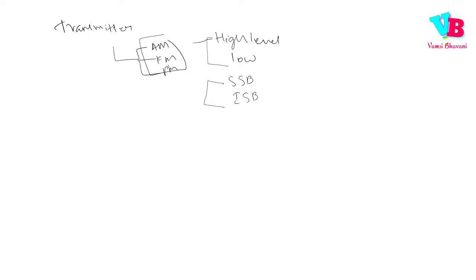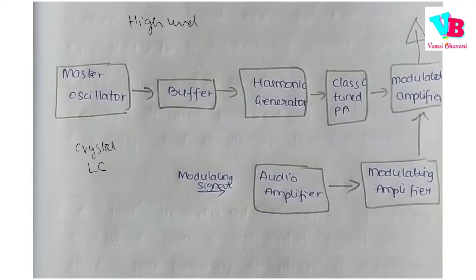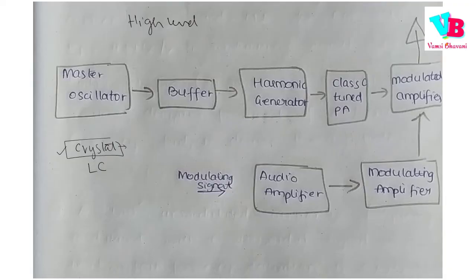We will explain a block diagram for High Level Transmitters. This is the High Level AM Transmitter block diagram. Here we have a Master Oscillator and a Buffer. The Master Oscillator can be a Crystal Oscillator or an LC Oscillator. The Crystal Oscillator provides a constant frequency — that is its advantage.